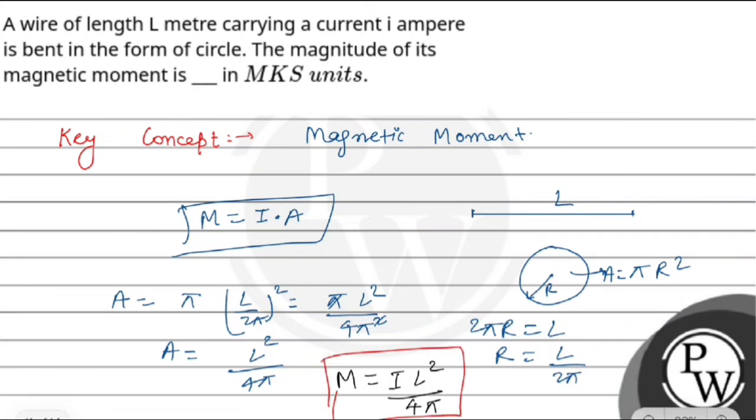So our final answer is M = IL²/(4π). This is our final answer. Hope you understood it well, all the best!